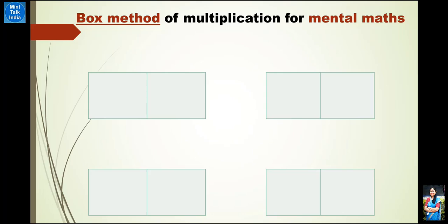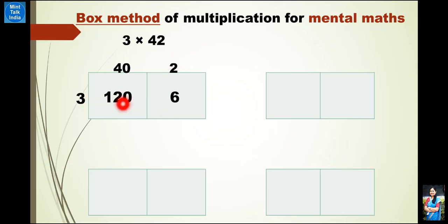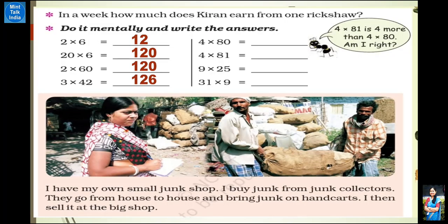So our multiplication is 3 times 42. We will use the box method of multiplication for mental maths — you studied box method in third standard. Expand 42 and write 40 and 2. Write 3 on the side. Now 40 multiply by 3 — mentally, 4 × 3 = 12, and side me 1 zero = 120. And 3 × 2 = 6. Now add 120 plus 6 is 126. So the answer is 126.